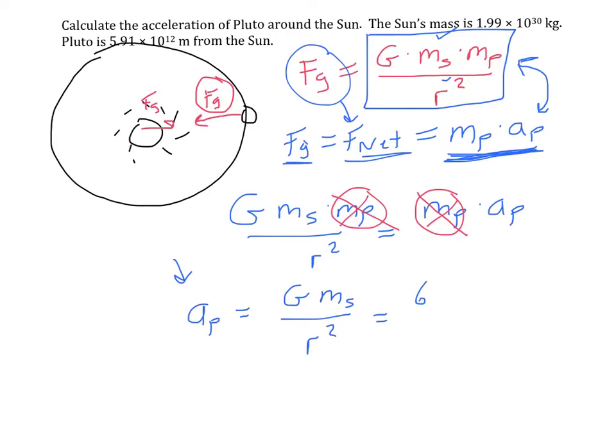So big G is 6.67 times 10 to the negative 11. I'm just going to ignore the units here for now. The mass of the Sun is 1.99 times 10 to the 30th. And the radius between them is 5.91 times 10 to the 12th. And that is squared. And so now I'm just going to plug this into my calculator. So 6.67 e to the negative 11 times 1.99 e to the 30th divided by 5.91 e to the 12th squared.